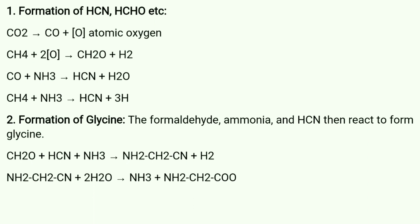How is glycine formed? The formaldehyde, as we have discussed earlier, ammonia and hydrogen cyanide. So the formaldehyde, ammonia and hydrogen cyanide, these three molecules combined with each other to give rise to glycine amino acid, the simplest amino acid.